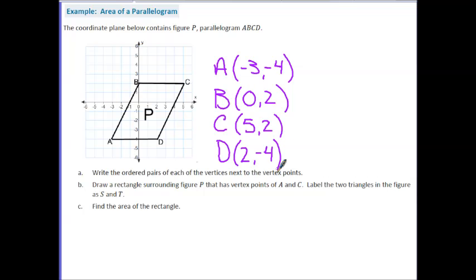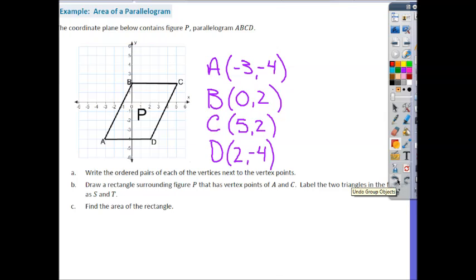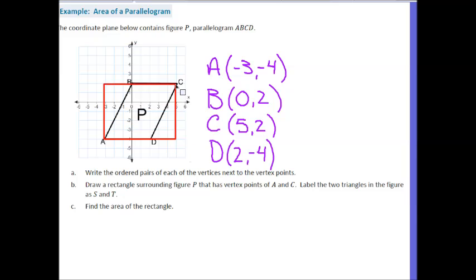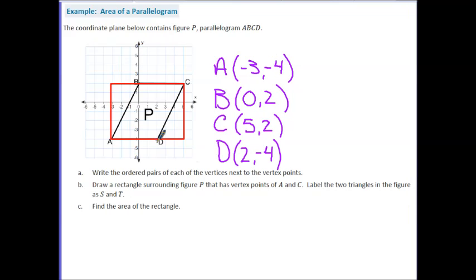Part B says draw a rectangle surrounding figure P that has vertex points of A and C. So our rectangle has to have right angles in it, and it is also a quadrilateral. It's stated in Part B that I have to have vertex points of A and C in my rectangle. So I know one corner of my rectangle is going to be point A, and the other corner is going to be point C. So when I do that, it creates two new points that are not on my parallelogram. We were told to label the two triangles in the figure as S and T. So this could be triangle S, and this can be triangle T.